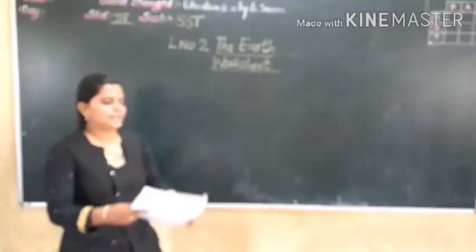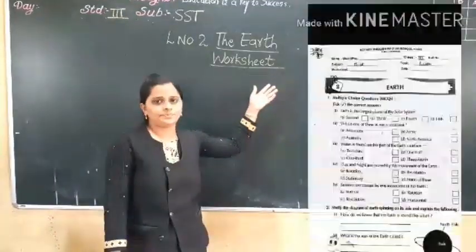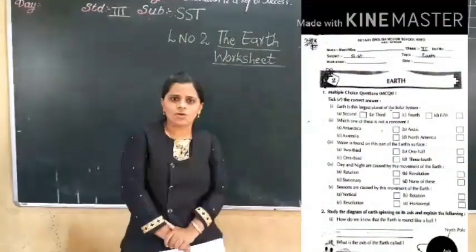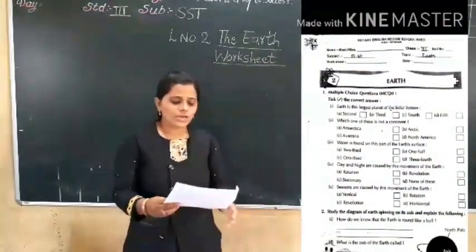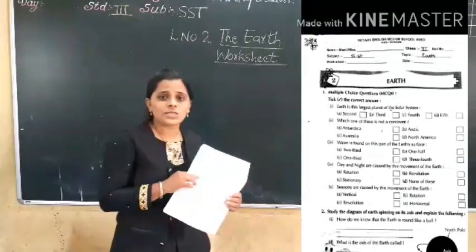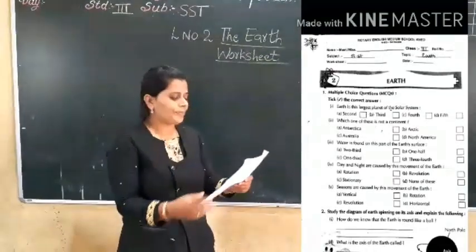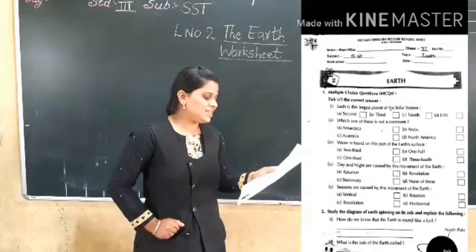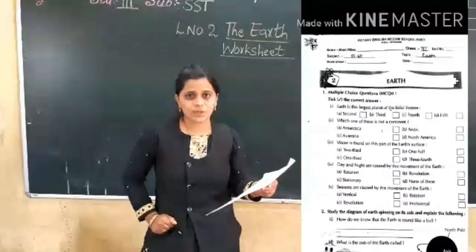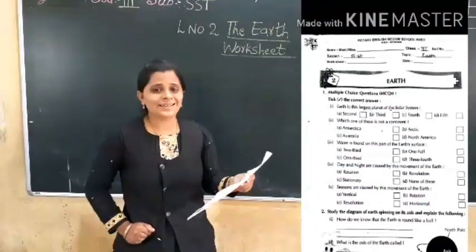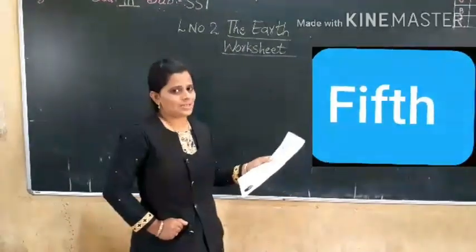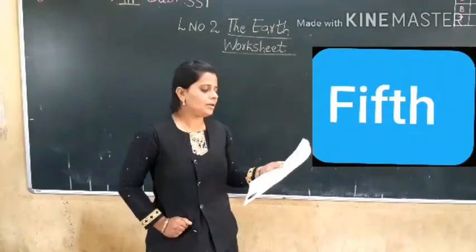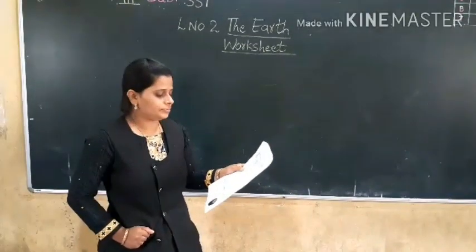Take out the first page. Let's discuss the worksheet. First we will discuss the multiple choice questions. The first question: Earth is the largest planet of the solar system. What I have explained is that it is the fifth largest planet. So this is the correct answer — fifth. Take a mark on 'fifth'.